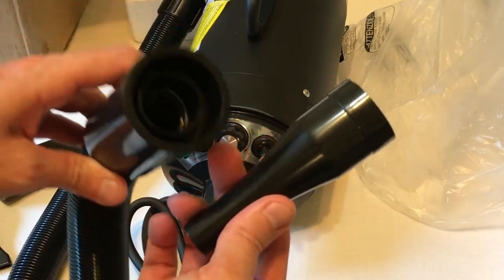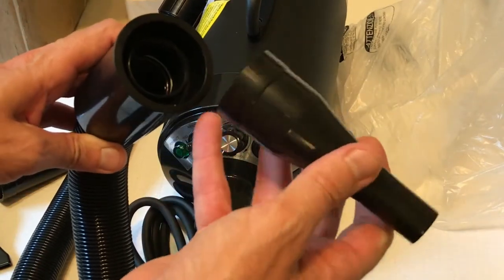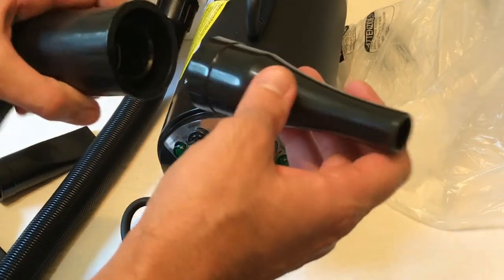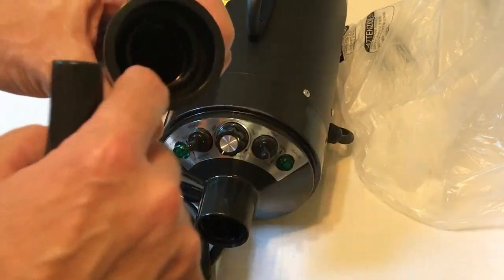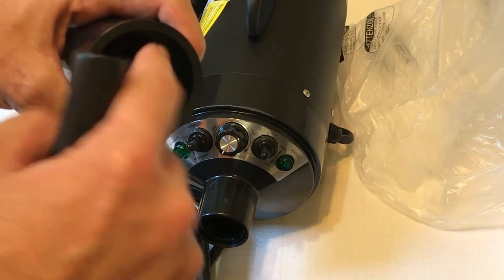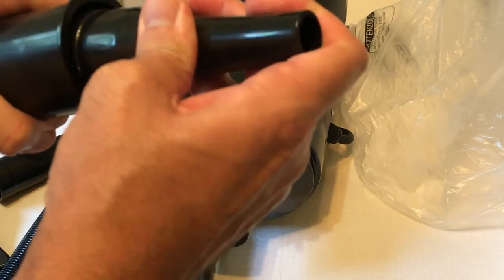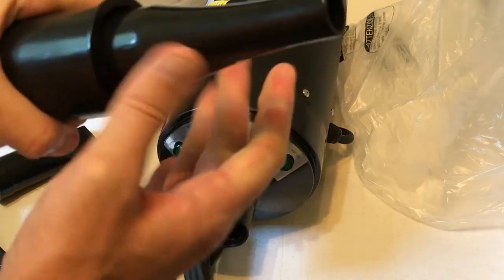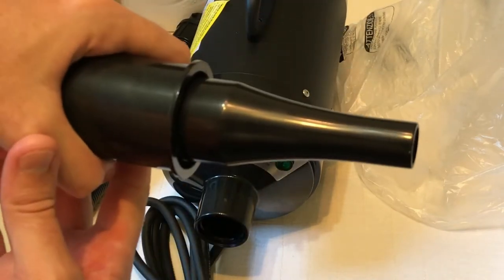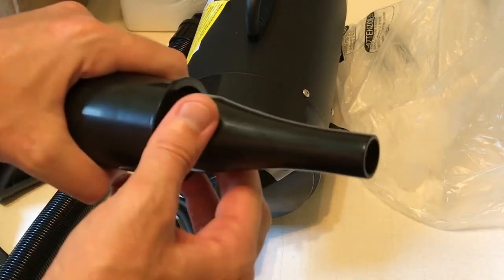One end is going to be where you're going to put your attachments. These attachments are a little bit hard to get on. You just have to be firm with them, but you've got an inner ring on the inside here that this is going to go around. So you just push it on there. Got to get it straight, and once you get it straight, you just be firm with it. And it goes on nice and tight.